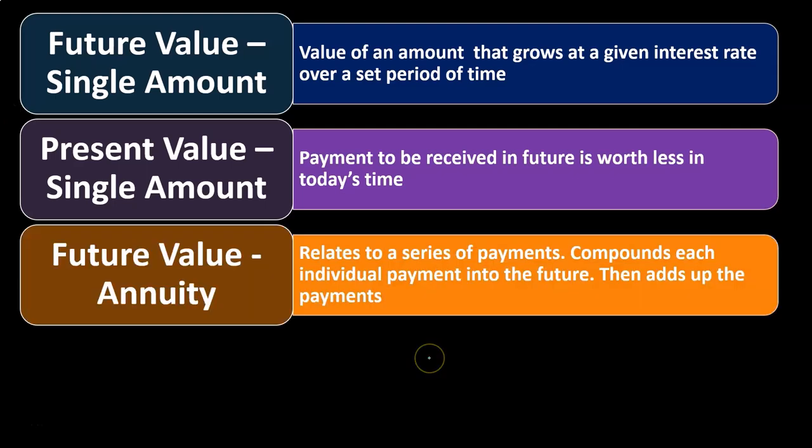You can think about an annuity as basically a series of payments. If we have a series of items that are going to be the same amount in the same period — like every year or every month — and we have the interest rate the same, those things fixed, then we can simplify our calculation by using an annuity type of calculation.